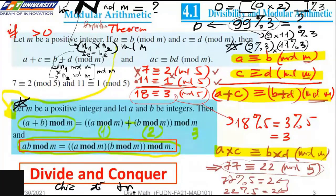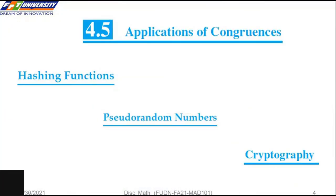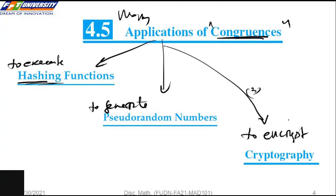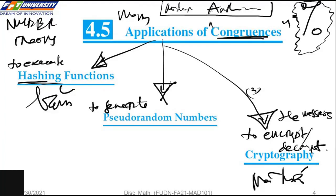This is very useful in computer science. We have many applications of congruence: to implement hash functions, to generate pseudo-random numbers, and to create encrypted messages. Here, we can find the hashing function.